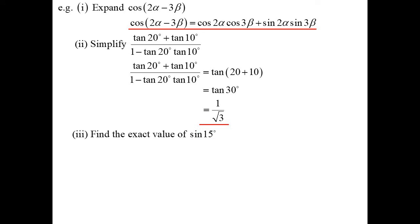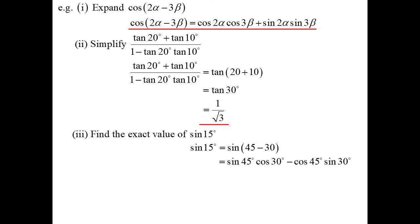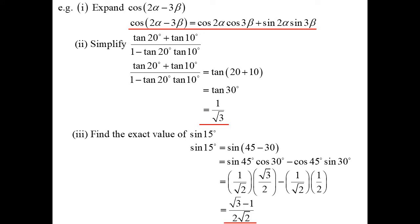Find the exact value of sin 15°. This is where these formulas become very useful — we have exact values for 30°, 45°, 60°, and boundary angles. We can write 15° = 45° − 30°. Using sin(α − β) = sin α cos β − cos α sin β, we get sin 45° cos 30° − cos 45° sin 30°. Substituting exact values and tidying up with a common denominator of 2√2, we get (√3 − 1) / (2√2).